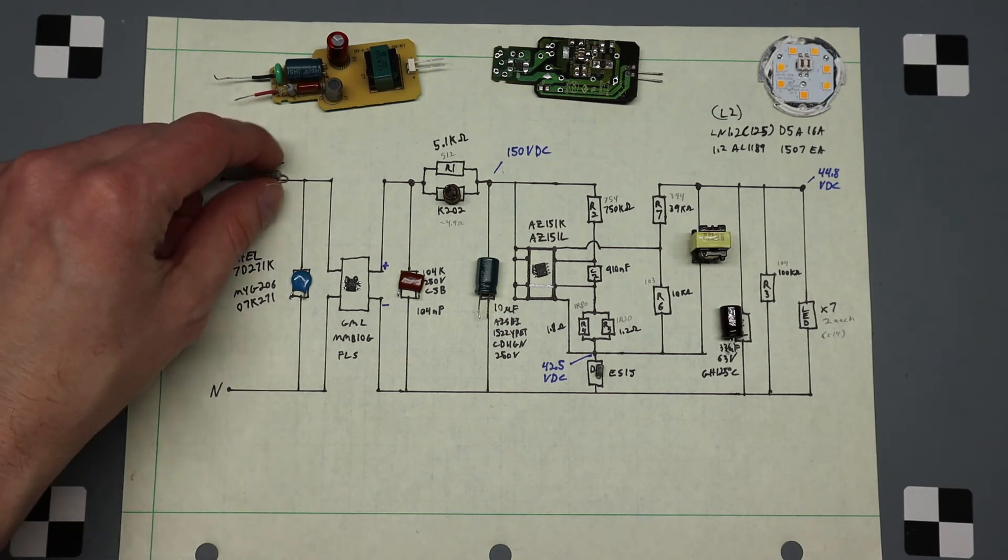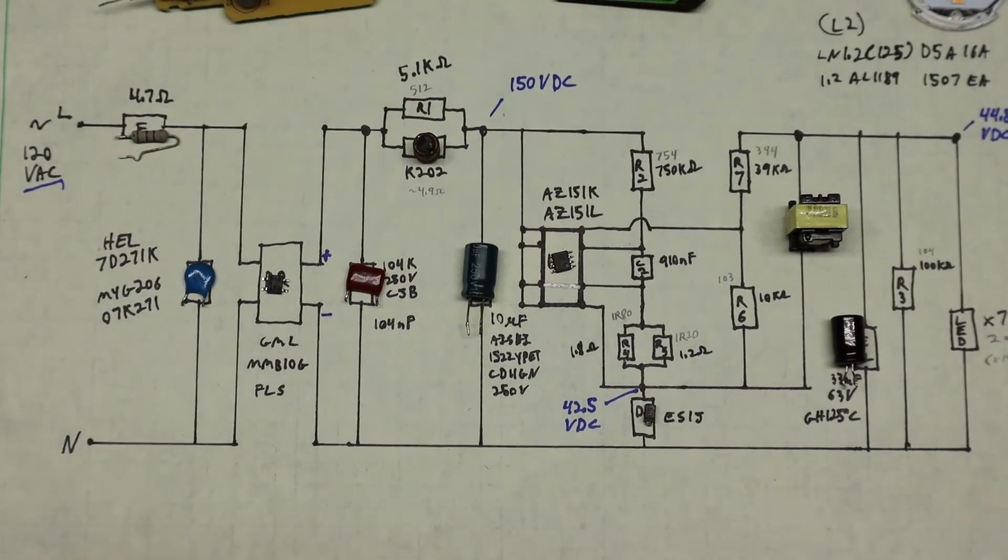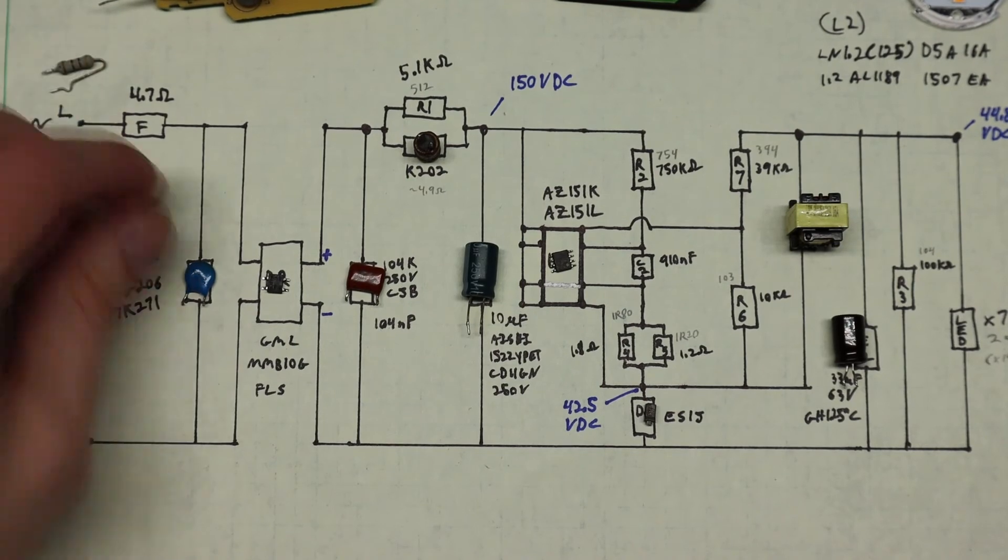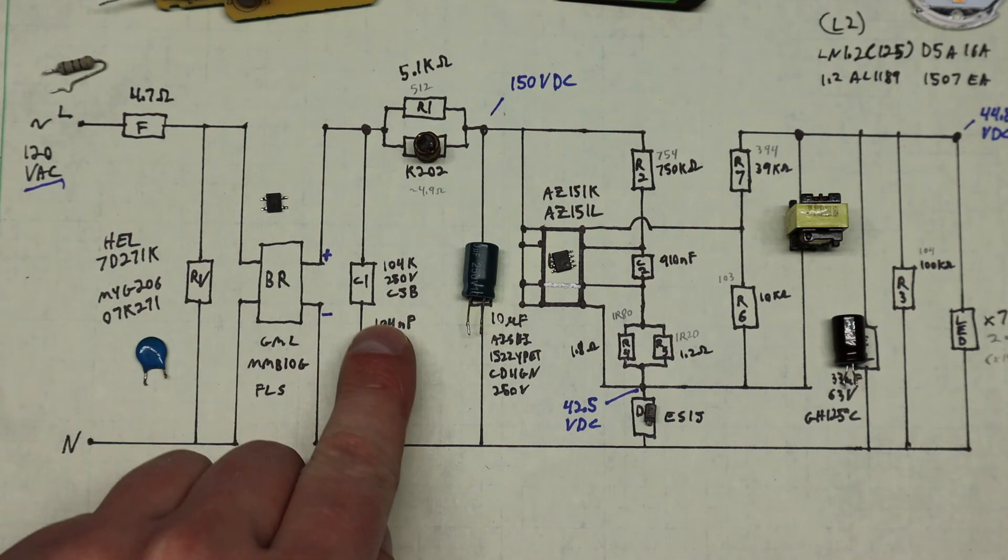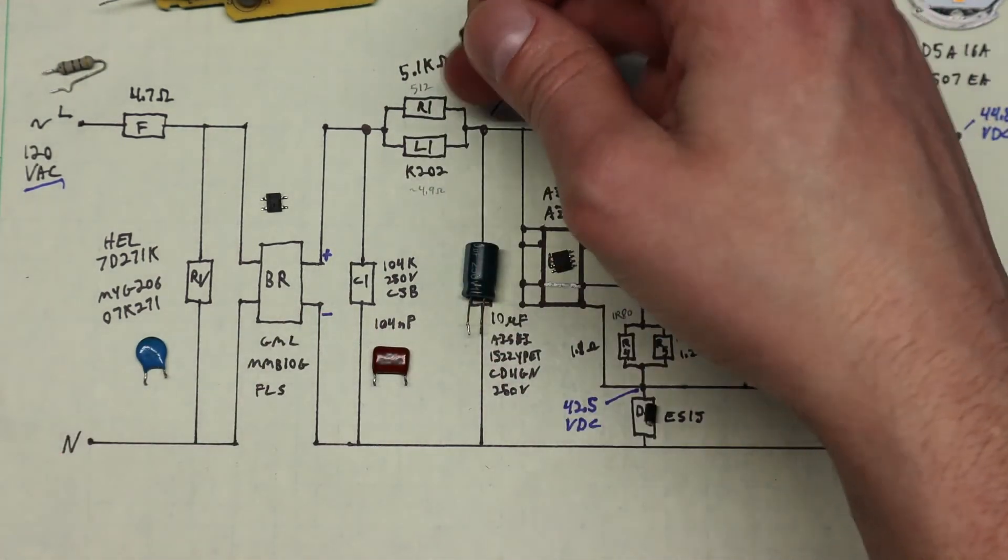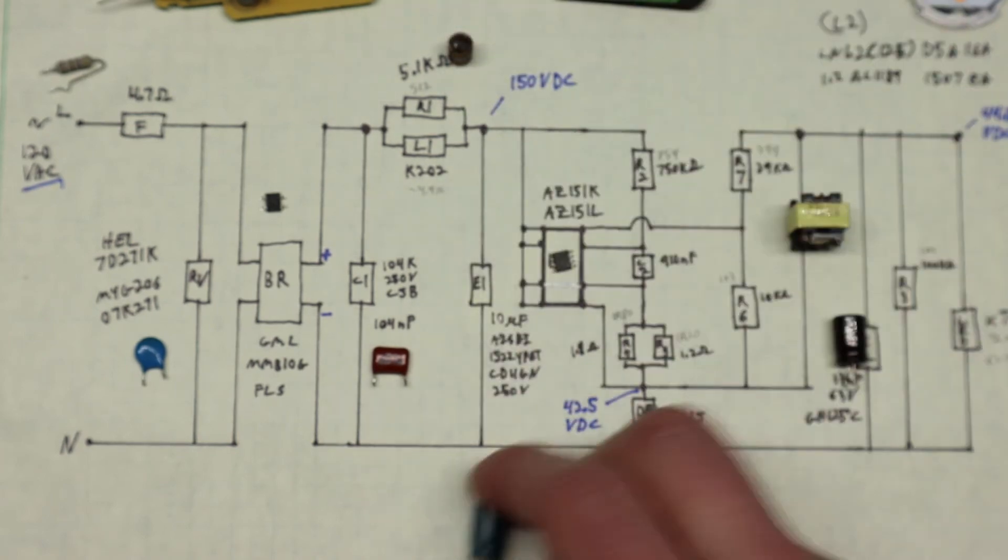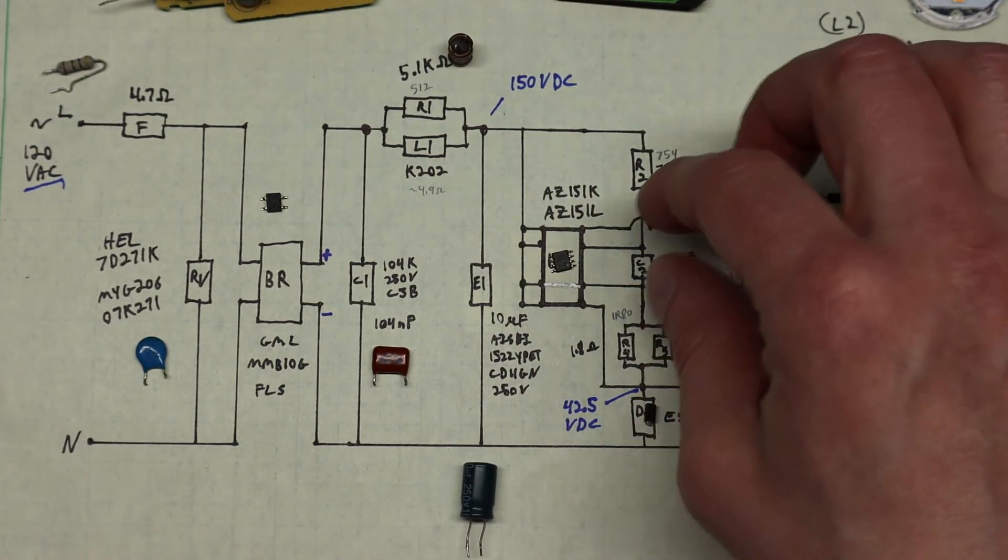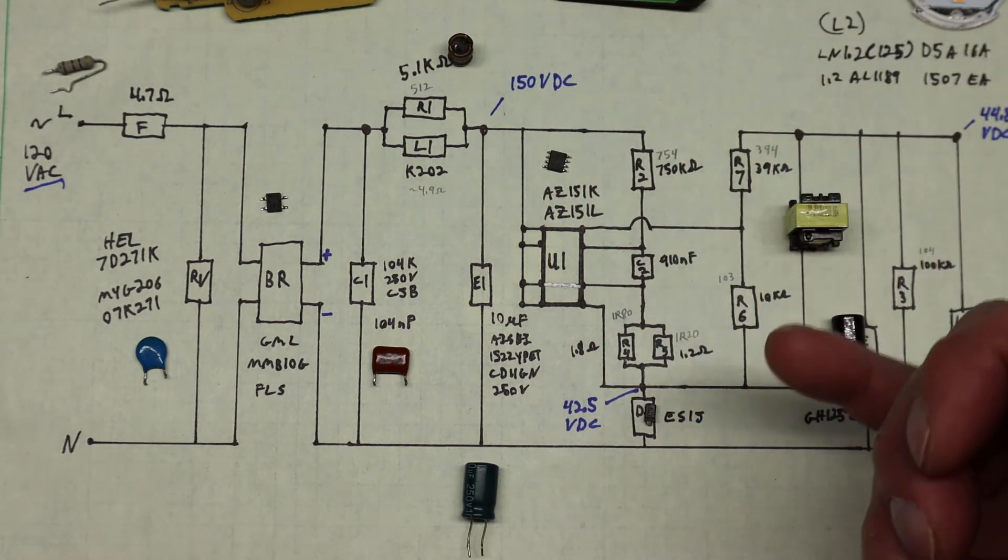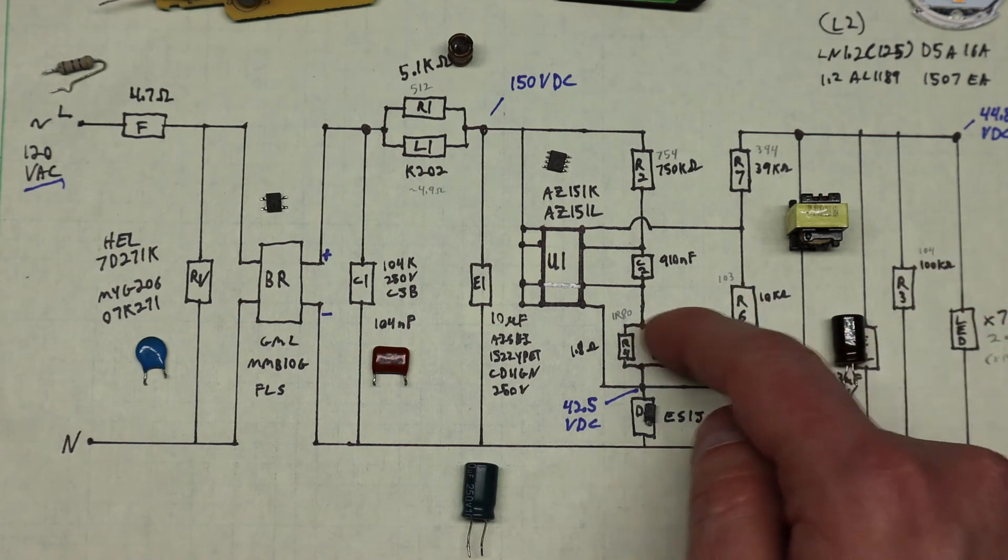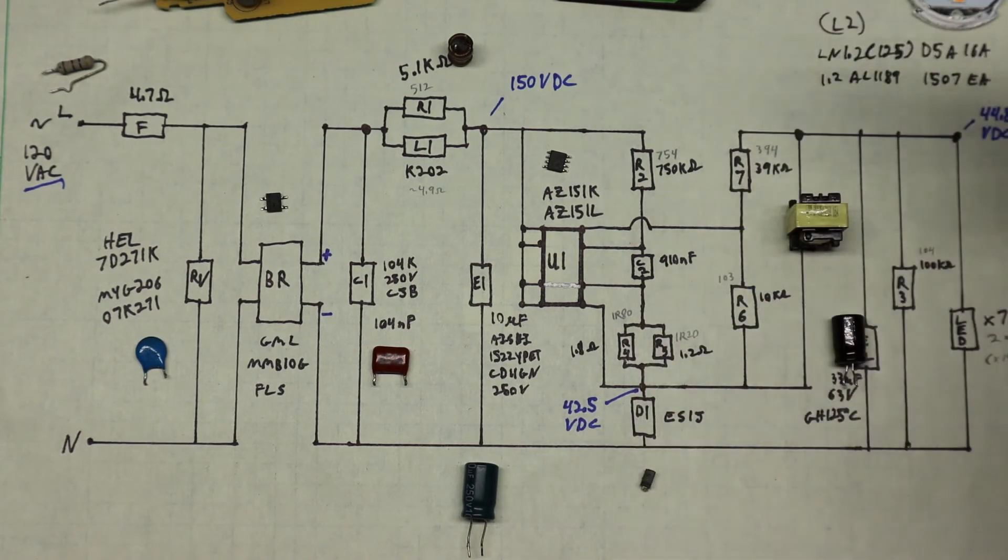We have a fusible resistor, or let me zoom in a little bit. There we go. So a fusible resistor, a varistor, your bridge rectifier, capacitor. We have a surface mount resistor, an inductor, another capacitor, the integrated circuit.